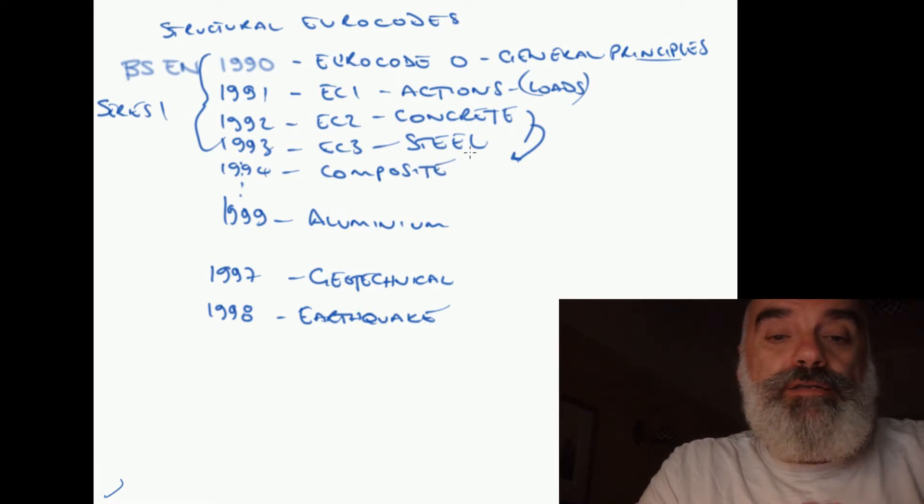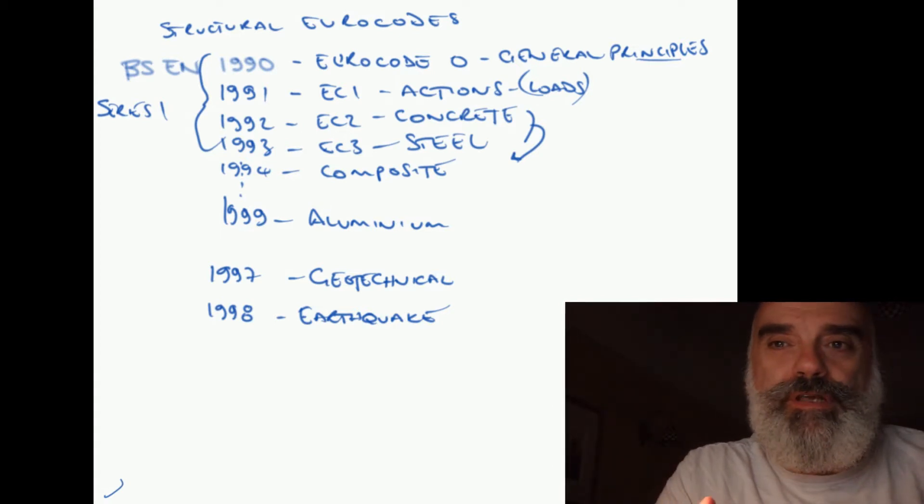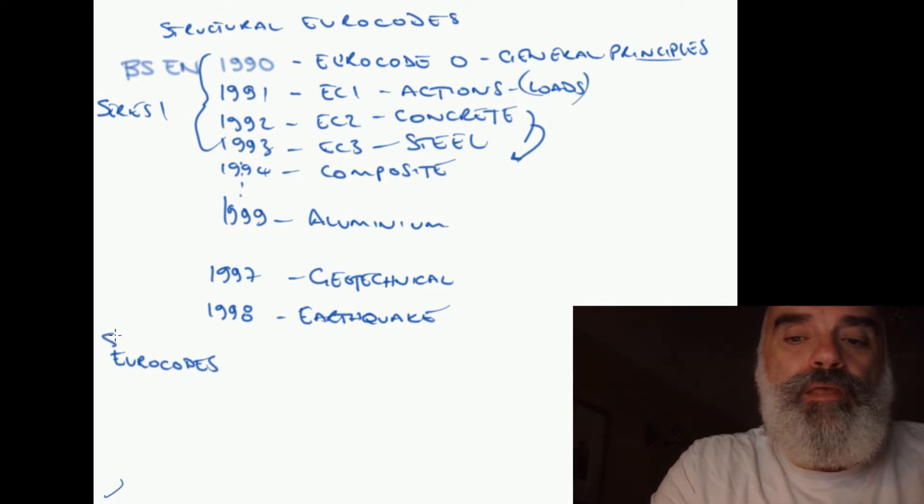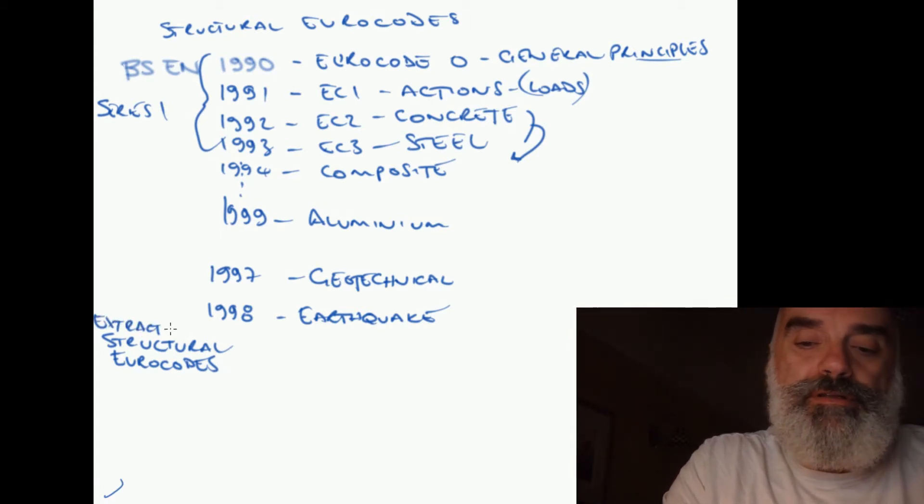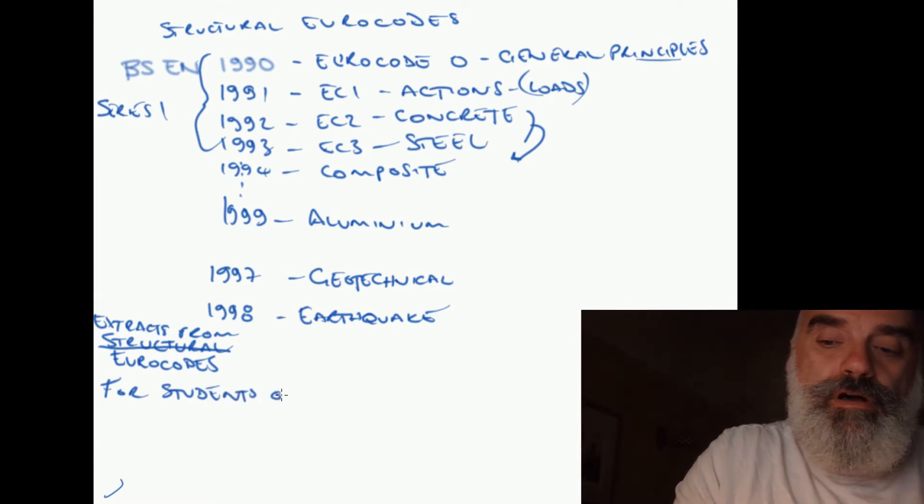So those are the codes that we're going to use. The full codes are available; they're quite lengthy documents in several parts. For the purposes of these videos, we're just going to look at a cut-down version of the codes. As we go through, we will refer to the various clauses or rules within the codes, and we'll use the referencing system from the Eurocodes. We will pretty much always stick to those codes that are published by BSI. The BSI publication is called 'Extracts from the Eurocodes for Students of Structural Design.'